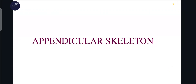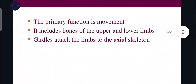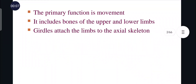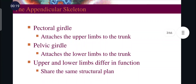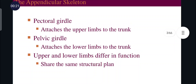Today's topic is the appendicular skeleton. The primary function of the appendicular skeleton is movement. It includes the bones of upper and lower limbs, and it also consists of girdles that attach the limb to the axial skeleton. The appendicular skeleton consists of pectoral girdles, pelvic girdle, and upper and lower limbs.